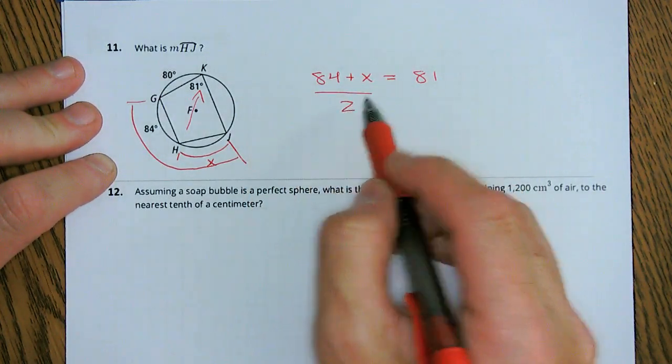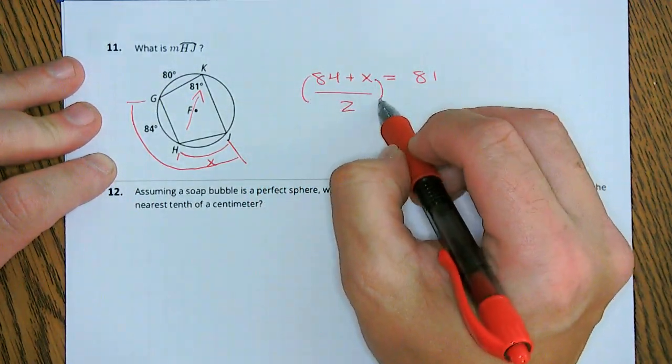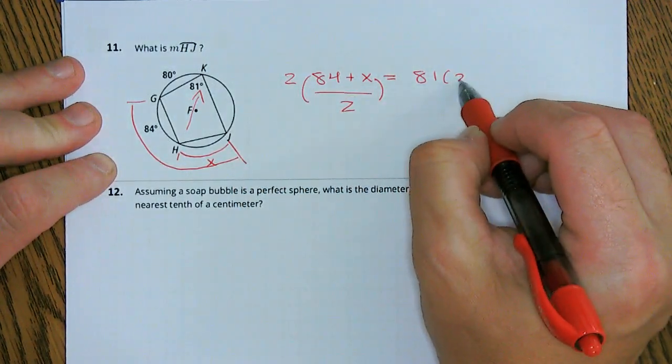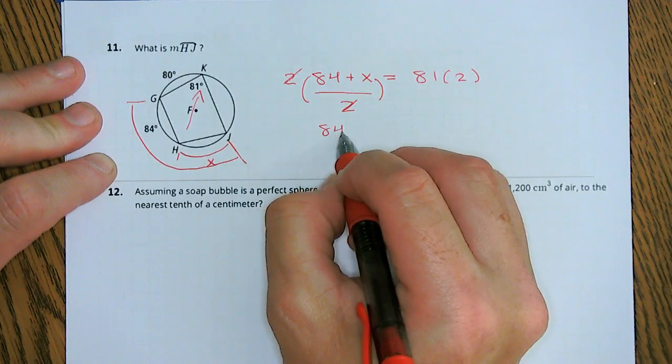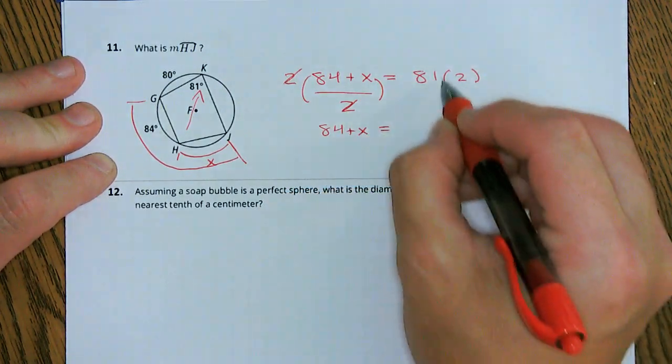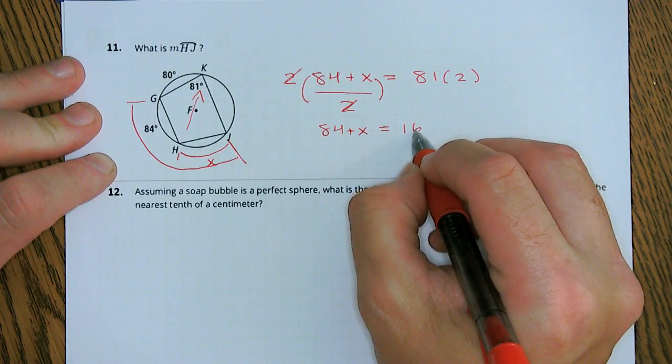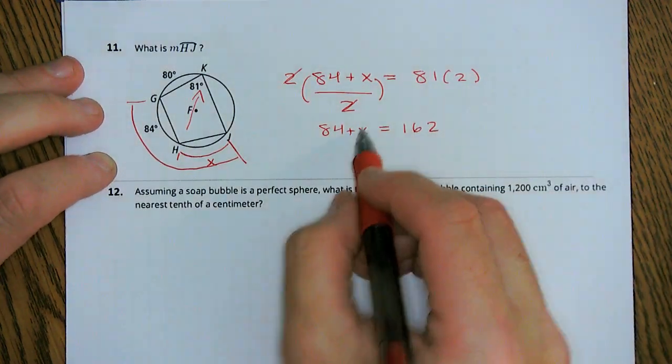So 84 and X, divide that by 2, so let's multiply both sides by 2. So the 2's cancel. So 84 plus X is equal to 81 times 2. Well, that's just 162.